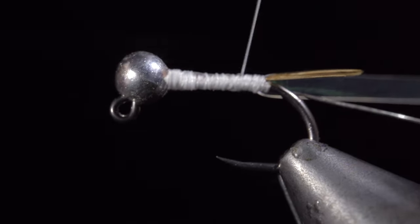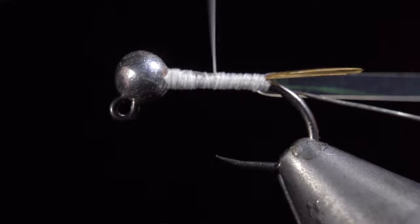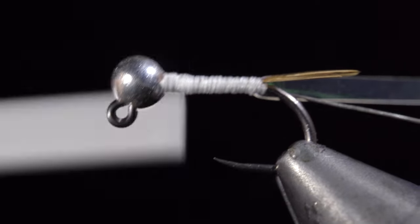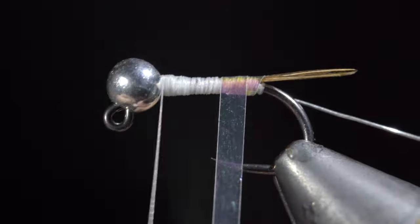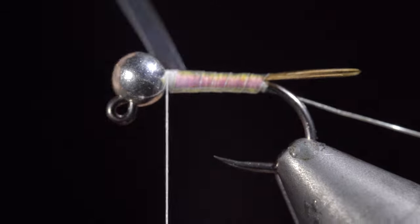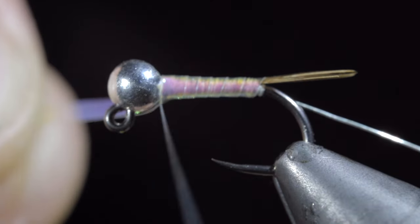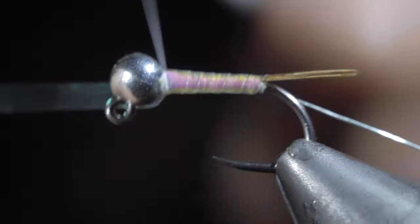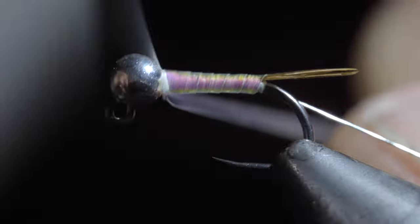At this point, we can wrap our thread all the way up to the head of the fly and begin to wrap our mylar forward. We'll do so in closed spirals slightly overlapping the last wrap. Once at the head of the fly, we'll take securing wraps both in front as well as behind our mylar and snip the excess free.